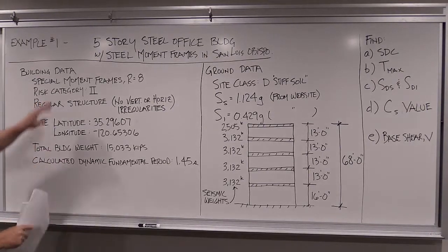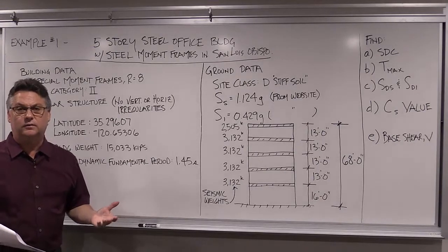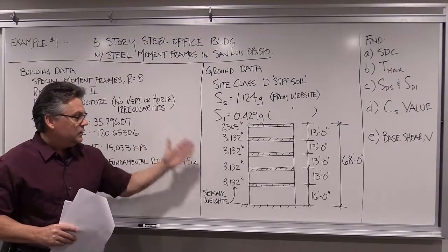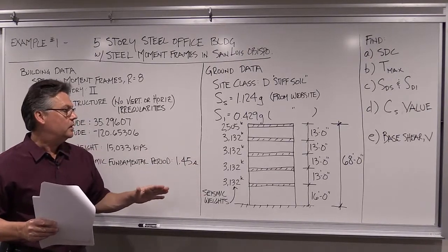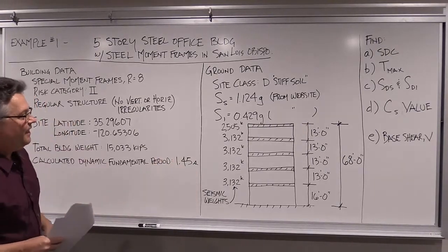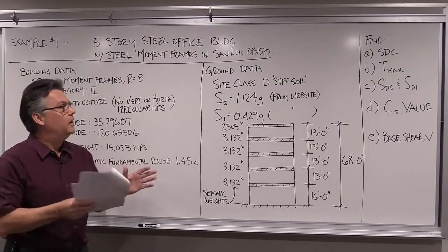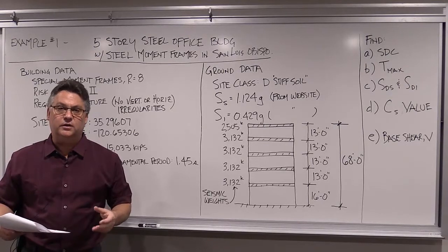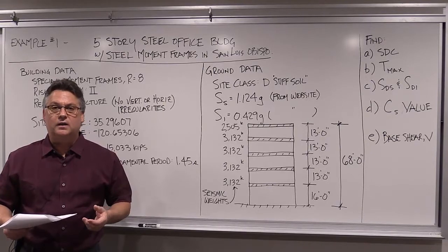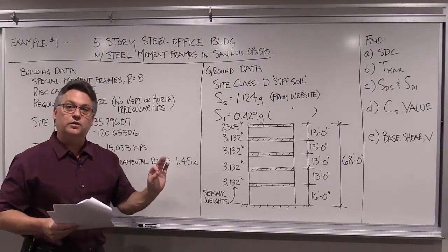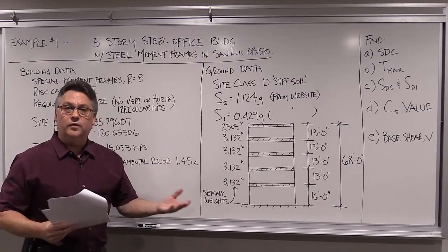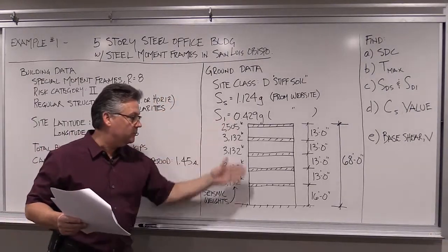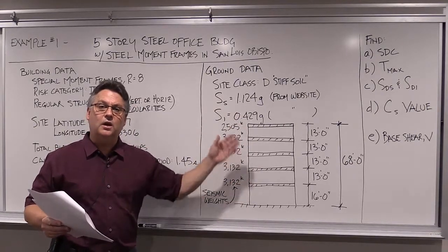Let's do our first example. Throughout this entire lecture series and our book, we are going to follow two different buildings. I'm going to give you as much information as we need right now to do this part of the problem — on an as-needed, need-to-know basis. Eventually you'll see the whole building. We actually laid out a five-story steel office building in San Luis Obispo and a concrete shear wall building in Los Angeles, five stories also. These two buildings are very different in the way they're going to respond to earthquakes, so they're two great examples. They're five stories, so they're fairly easy to do, but more importantly, most of your buildings will probably be in this height range.